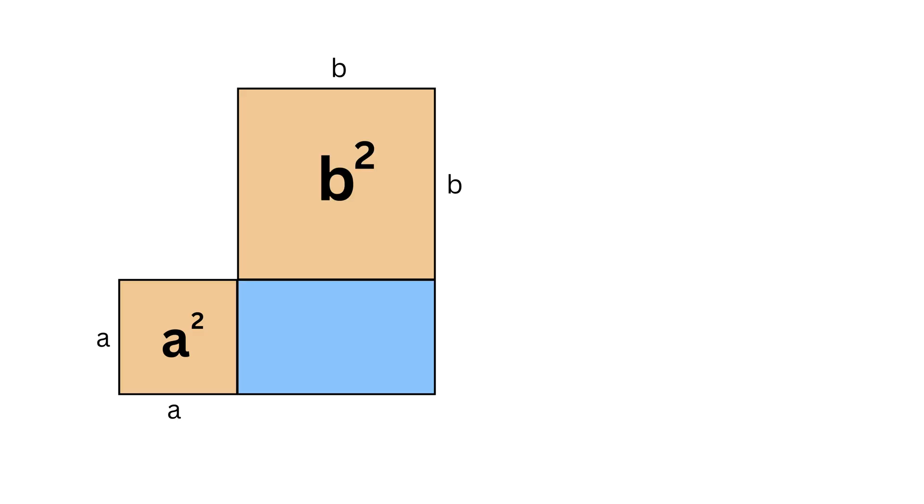Then complete this rectangle such that this will be of side length a, and this will be b. Similarly complete this rectangle such that this will be of side length a, and this will be b.